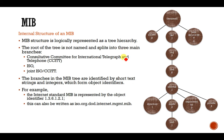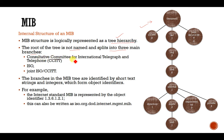When storing data there must be a structure to follow. The MIB structure is logically represented as a tree hierarchy. The root of the tree is not named, and it splits into three main branches: CCITT (Consultative Committee for International Telegraph and Telephones), ISO, and joint ISO-CCITT. Every node is represented with some numbers that are used for accessing a particular object in the hierarchy. The branches in the MIB tree are identified by short text strings and integers which form object identifiers.